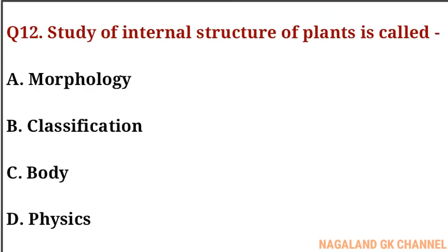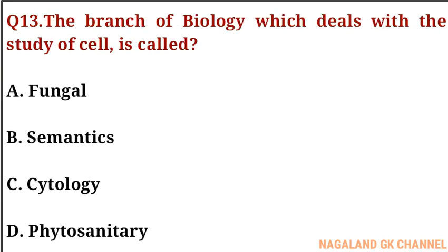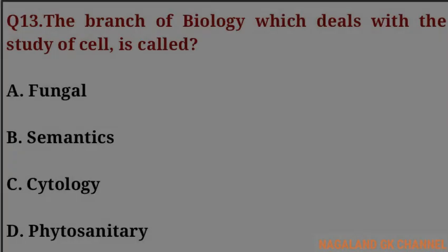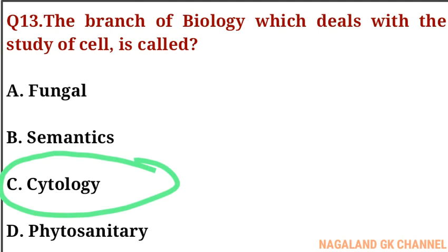Question number twelve: the study of the internal structure of plants is called what? The correct answer is option A, that is anatomy. Question number thirteen: the branch of biology which deals with the study of cells is called what? The correct answer is option C, that is cytology.